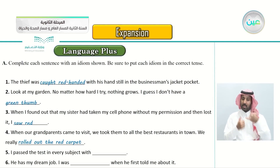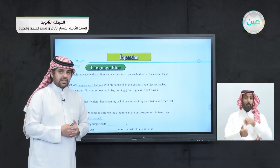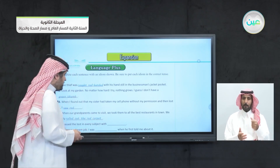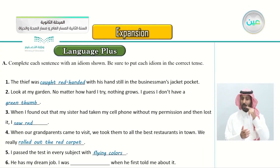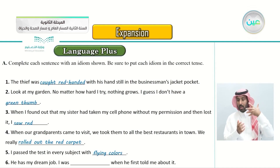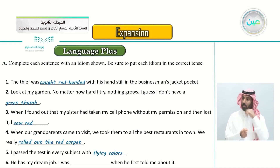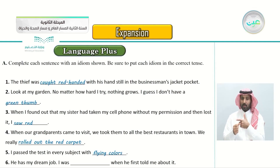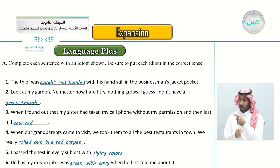Number five: 'I passed the test in every subject with ___.' I am proud of myself - with flying colors. Number six: 'He has my dream job. I was ___ when he first told me about it.' When someone has your dream job - green with envy. I was green with envy when he first told me about it.